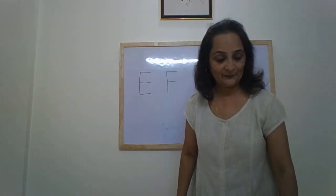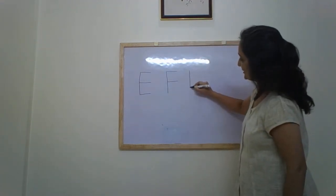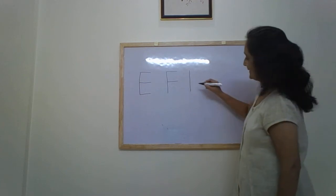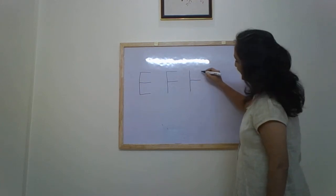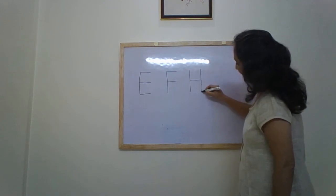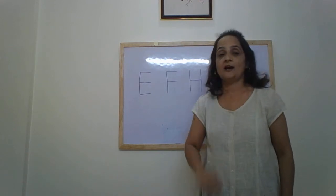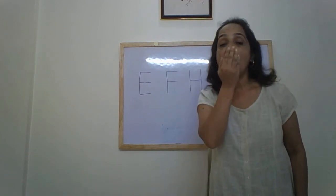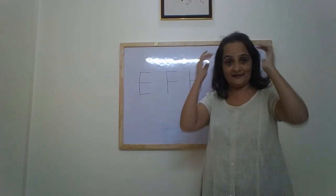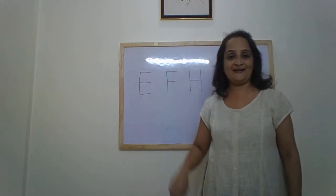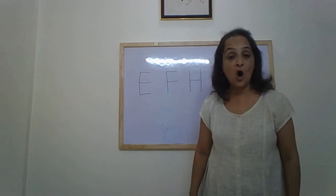Next letter is H. Standing line, sleeping line in the middle, another standing line — letter H. H makes the sound H. H for head, hand, hat, house, horse.